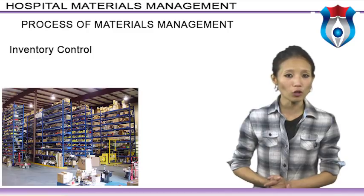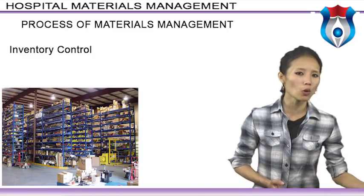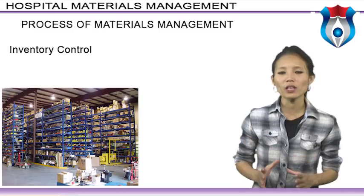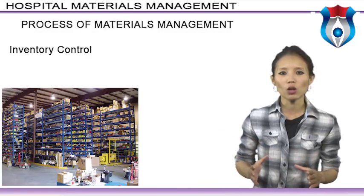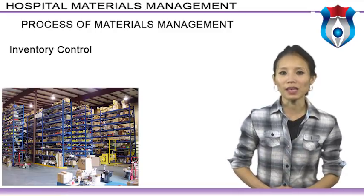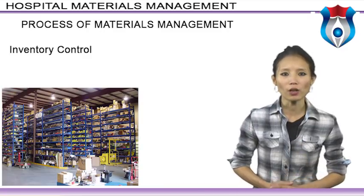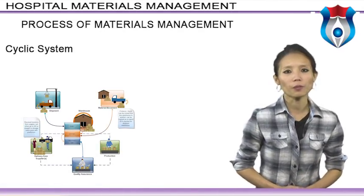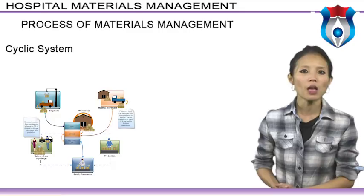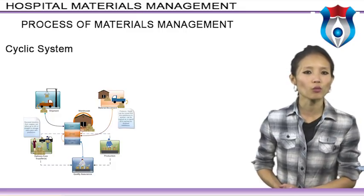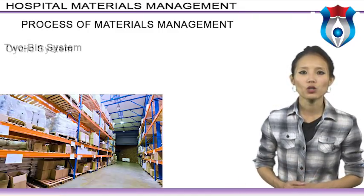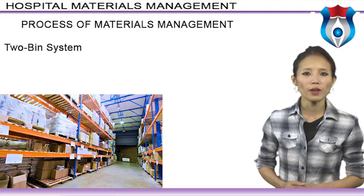Inventory control principles seek to minimize investment in materials so that sufficient working capital is available for other important activities. The primary purpose is to decrease material costs by minimizing stock-out costs while preventing overstocking, which results in locking up of capital, possible pilferage, and obsolescence. The cyclic system is a periodic inventory system where physical stock position is reviewed at fixed intervals and orders are placed depending on stock on hand and rate of consumption — the ordering interval is fixed but the quantity ordered varies each time.